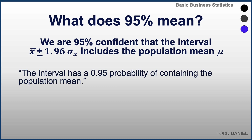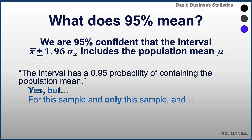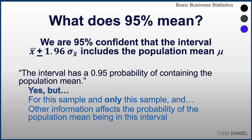It is tempting to say that this interval has a 95% probability of containing the population mean, and that is true, but it is an oversimplification. For every sample that we draw, we create a new 95% confidence interval, so this confidence interval contains the mean 95% of the time for this sample and only for this sample. Other information affects the probability of the population mean being inside this interval, so clearly we have more to learn about creating confidence intervals around a mean and also around a proportion.